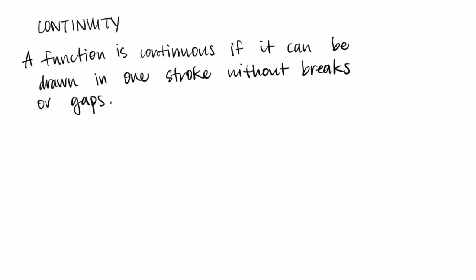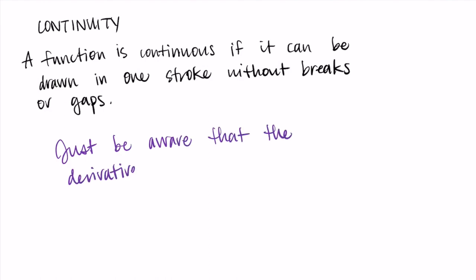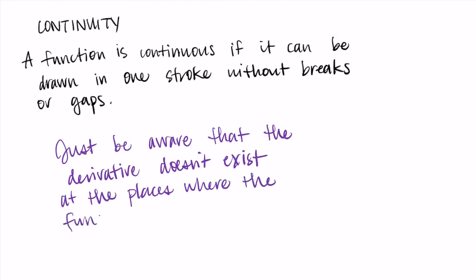So why do we care about continuity in the context of calculus? It is important because at places where the function isn't continuous, the derivative doesn't exist. That's because when it's not continuous, we can't draw a tangent line at those points, so we don't know what the derivative is there. When we're talking about taking the derivative, we just want to be careful that it can only happen at places where the function is continuous.